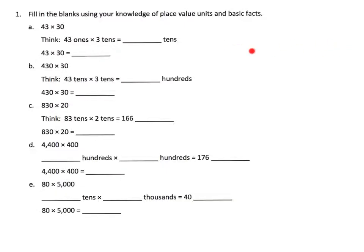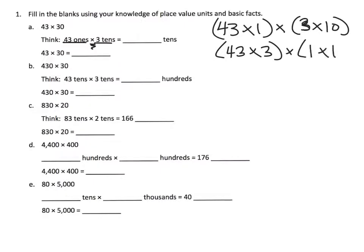This is the mathematical way of explaining what is going on. We could use the commutative property and the associative property to rearrange this to be 43 times 3 times 1 times 10. I just took these and used the commutative property and regrouped and rearranged them.